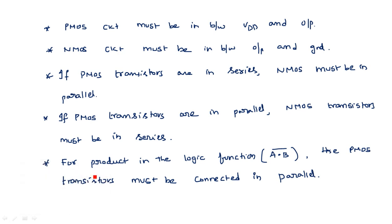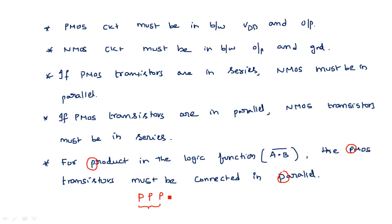This rule is called triple P — PPP. The first P represents product, the second P represents PMOS, and the third P represents parallel. So PMOS transistors must be connected in parallel for product realization. This concept is especially useful when realizing complex logic functions like A·B + C·D whole bar, rather than just simple inverter, NAND, or NOR gates.